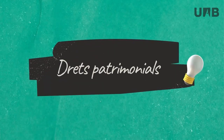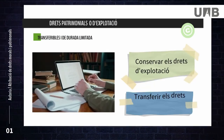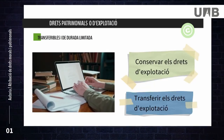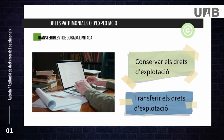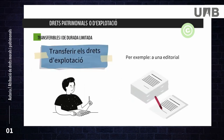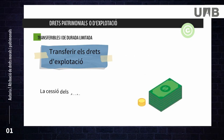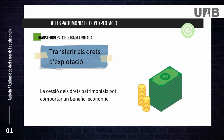In this video we will see patrimonial or exploitation rights, which have a limited duration. The author can choose to keep them or transfer them. If transferring them, the author must do so in writing, either by assigning them or by selling them exclusively or non-exclusively.